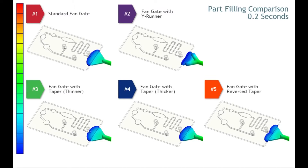Now let's take a closer look at the fill patterns for all the gate examples, at 0.2 and 0.4 seconds into filling. On screen are the fill patterns at the 0.2 second interval. Focus on the flow front development, specifically how the flow through the gates is different depending on their style and size. The most significant difference at this interval is between the Y runner and the reverse tapered fan gate. The material flow advances more quickly to the outside fan than to the tapered fan gate.